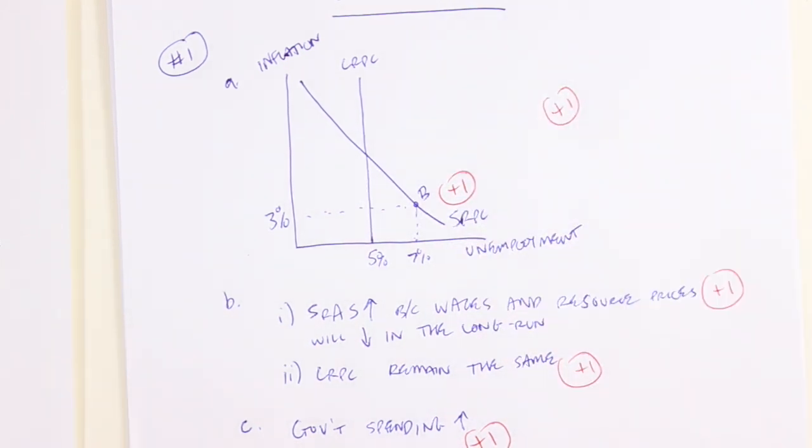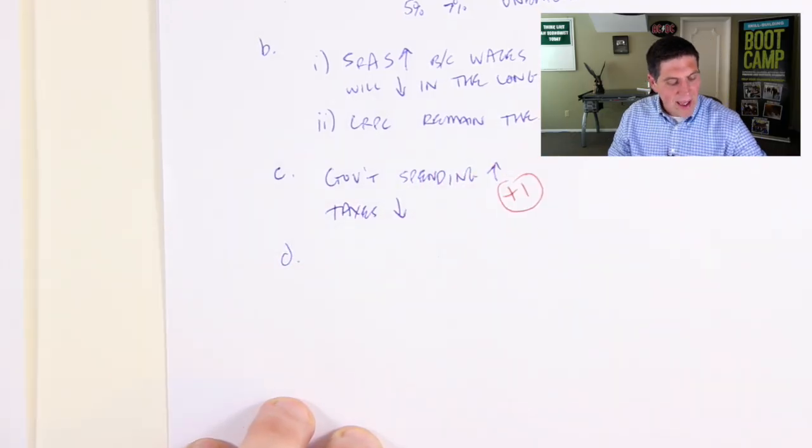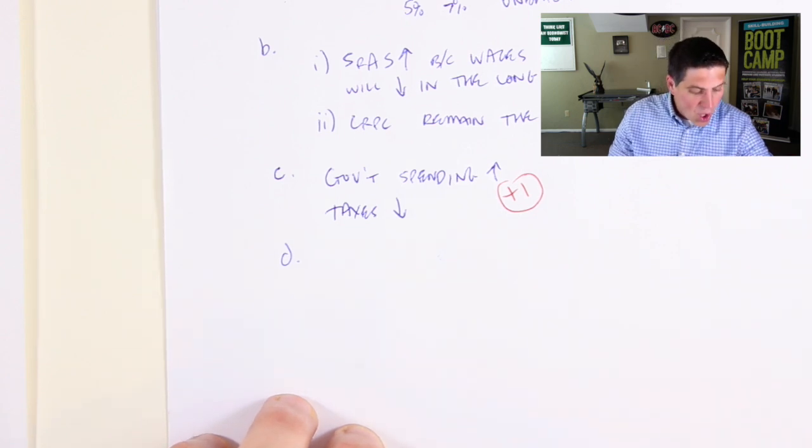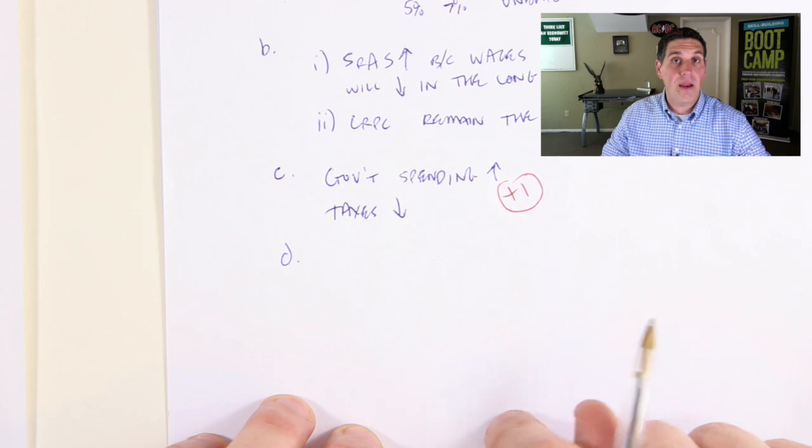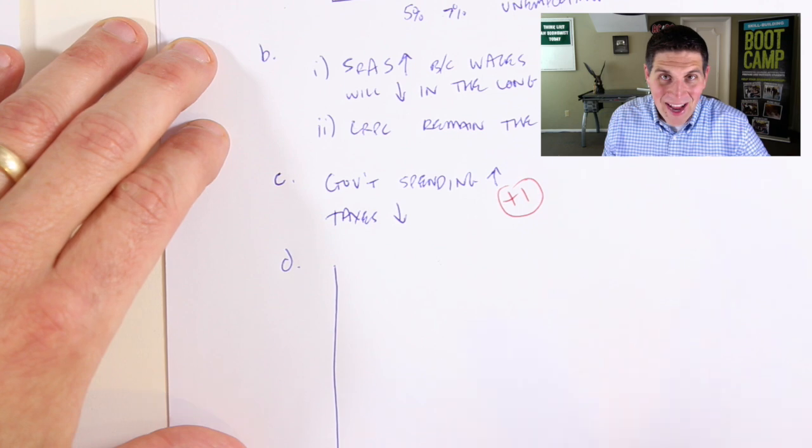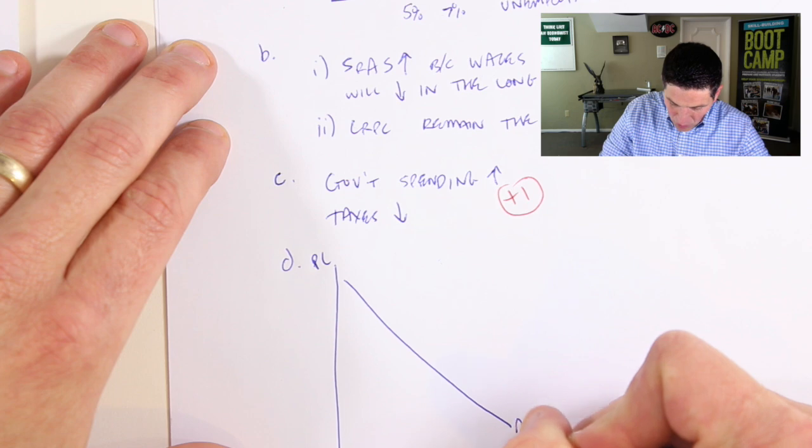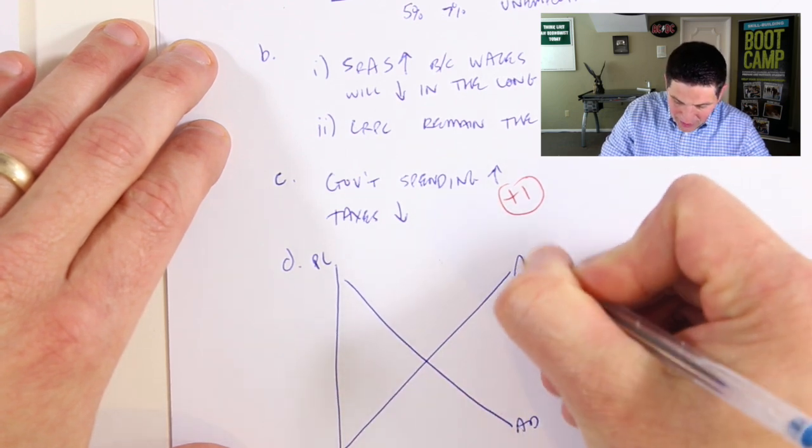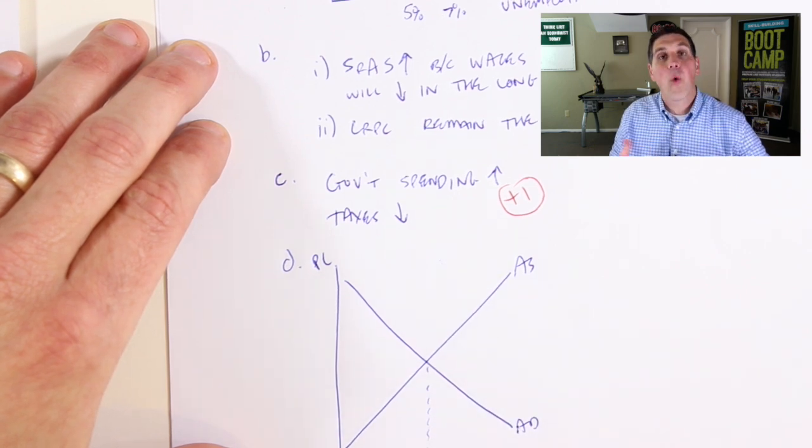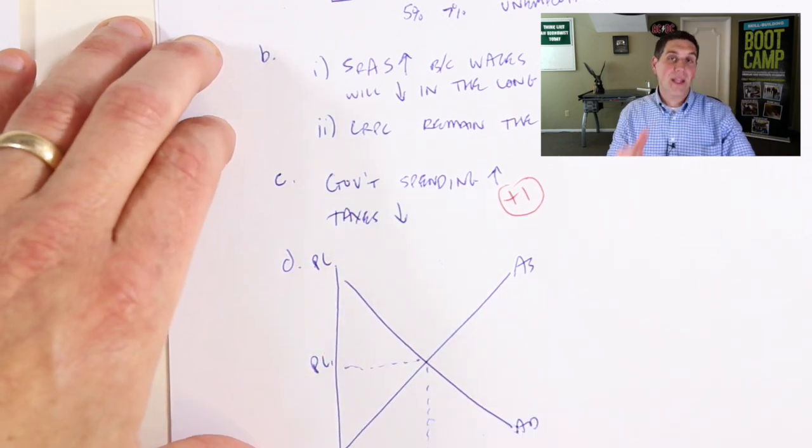In D, it asks you to talk about a specific graph, your favorite graph, aggregate demand and supply. And they're asking you, the fiscal policy you said in C, what happens on aggregate demand and supply graphs? So you have to actually draw the graph in this case. It's the most important graph in all of macroeconomics. So you know how to draw it. GDP real. And this is the price level. You got a downward sloping aggregate demand, upward sloping aggregate supply, short-run aggregate supply. And you've got dot, dot, down. This is, I'll put Y1 or the quantity of the GDP. And over here, I'll put PL1. That's where we currently are.